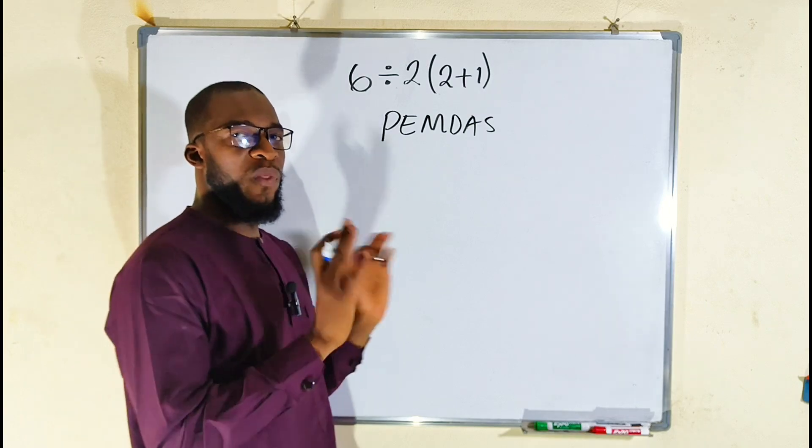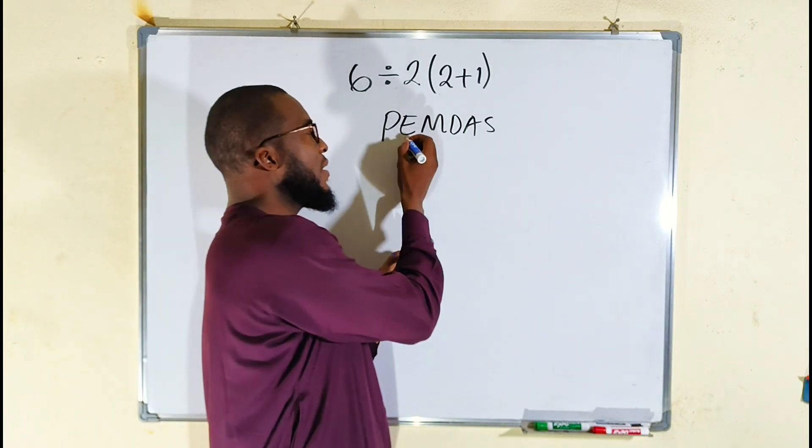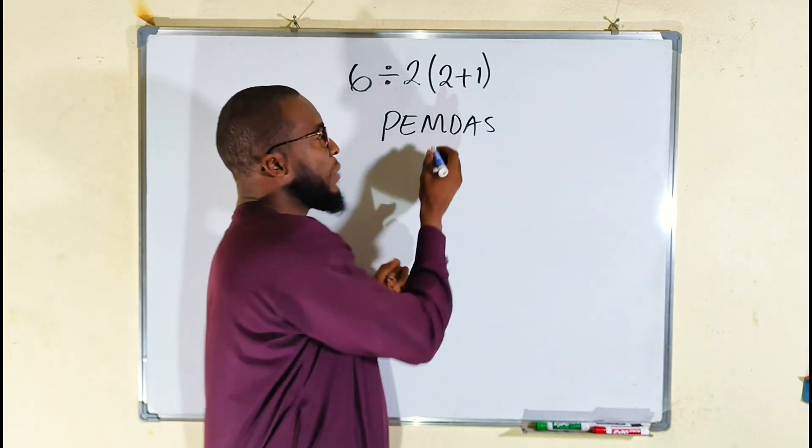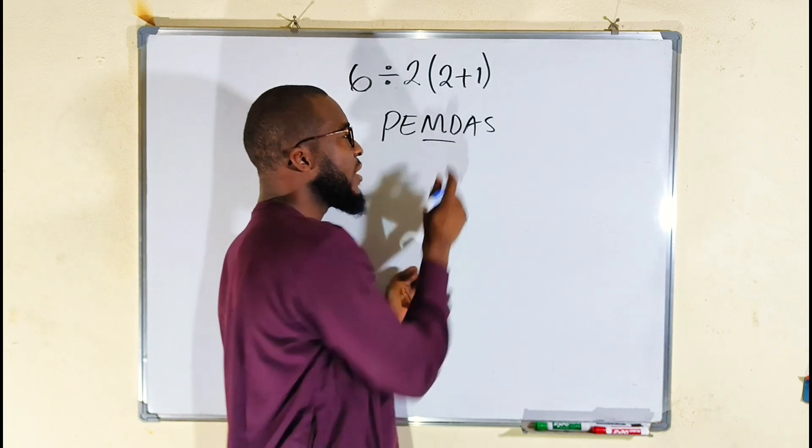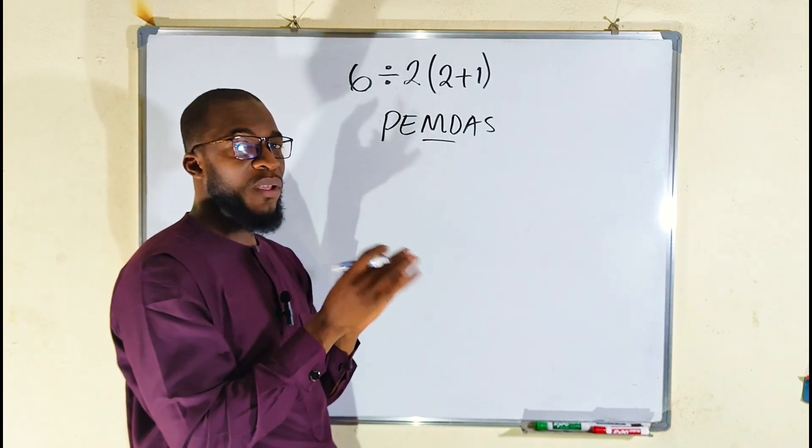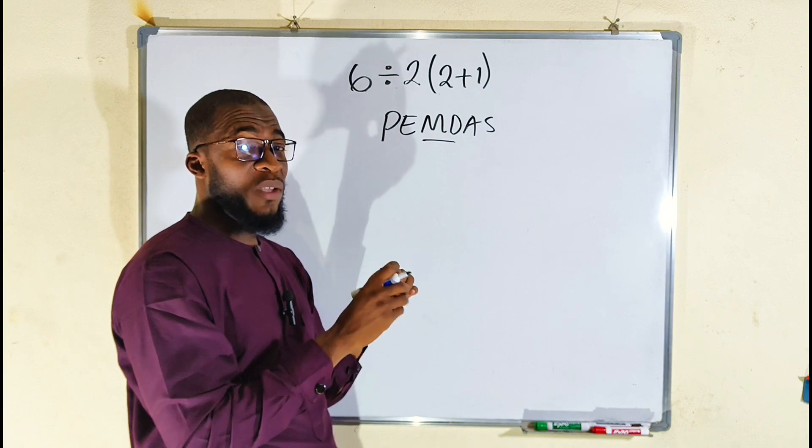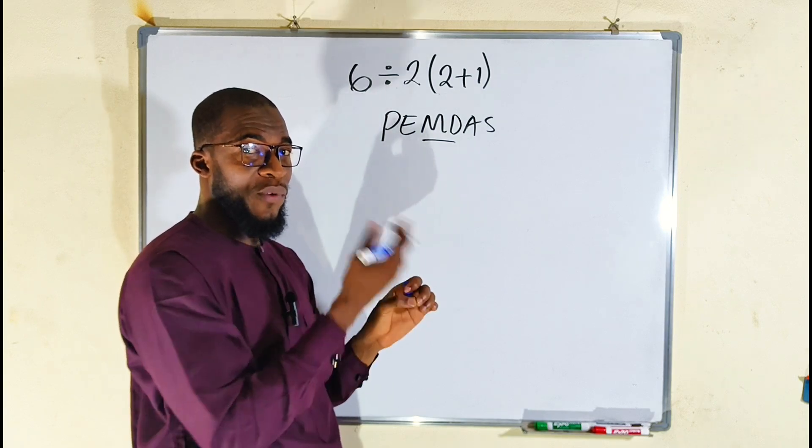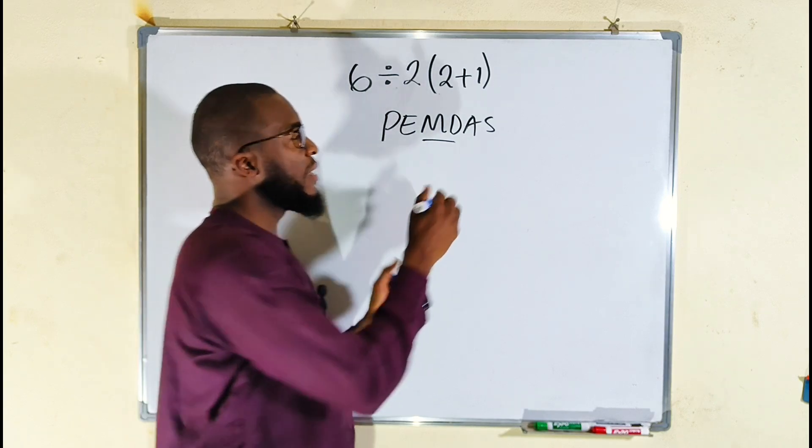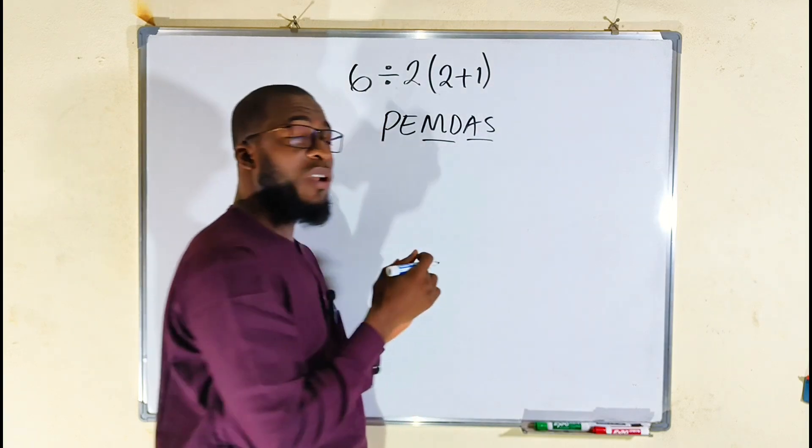P stands for parenthesis. E stands for exponent. But remember that multiplication and division are carried out simultaneously, starting with whichever comes first from left to right. The same thing with addition and subtraction.